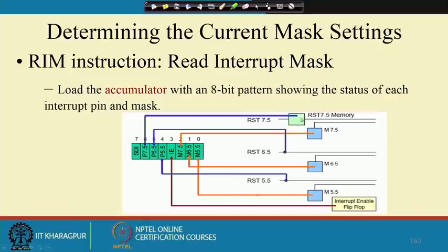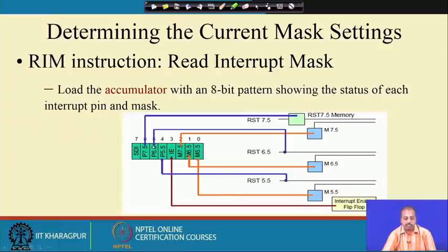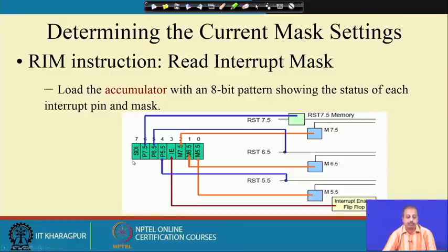The RST 7.5 memory comes to bit 6, the 6.5 pin status to bit 5, the 5.5 pin status to bit 4, the interrupt enable flag to bit 3, and the mask flip-flop contents M 7.5, M 6.5, and M 5.5 come to bits 2, 1, and 0. Bit 7 is reserved for serial data input. The RIM instruction is used for serial data input just as SIM was used for serial data output.